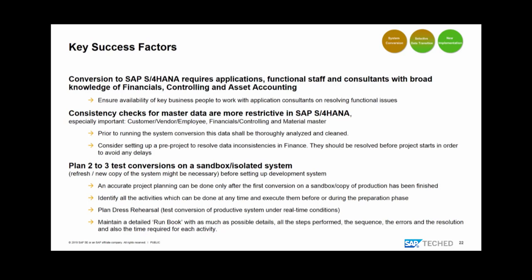For system conversion, doing minimal scope for the technical uplift requires the inclusion of functional expertise — either have it on board or bring in application consultants. Test conversions are critically important — not only doing the technical conversion part with the Software Update Manager and optimizing downtime, but going through the whole process including application-related preparation steps and post-upgrade steps. Involve business people in these test conversions, create runbooks and scripting about the procedures, refine them iteratively, and you'll get a very forecastable productive system conversion.